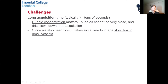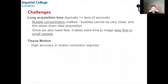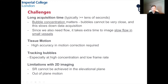Since we need flow, it takes extra time to image slow flow in small vessels because you have to wait until the small vessels are perfused with these agents. Another challenge is tissue motion — tissue always moves, especially over long acquisition times. To correct this motion, when we're talking about spatial resolution at the level of tens of microns, tissue motion correction accuracy must be at least at that level. Another challenge is tracking bubbles, particularly when bubble concentration is high and frame rate is low.